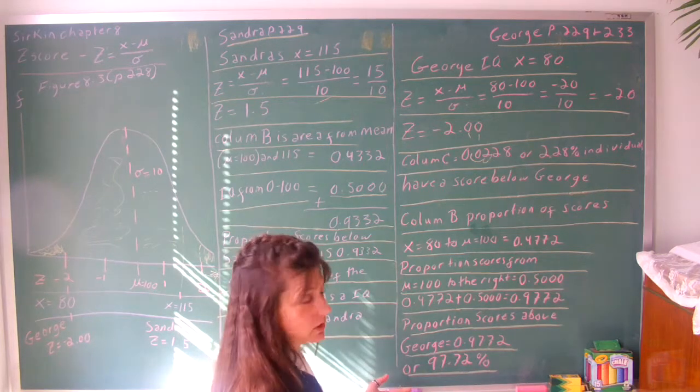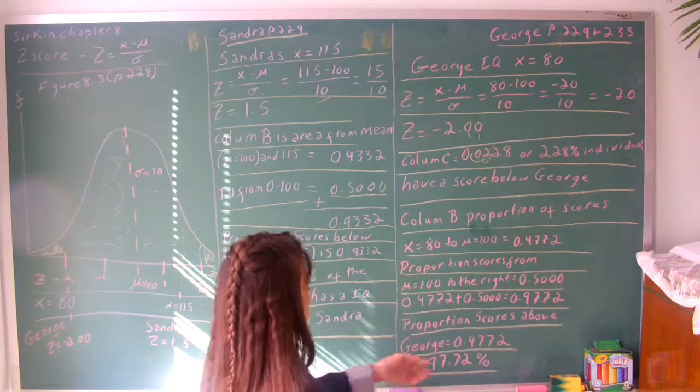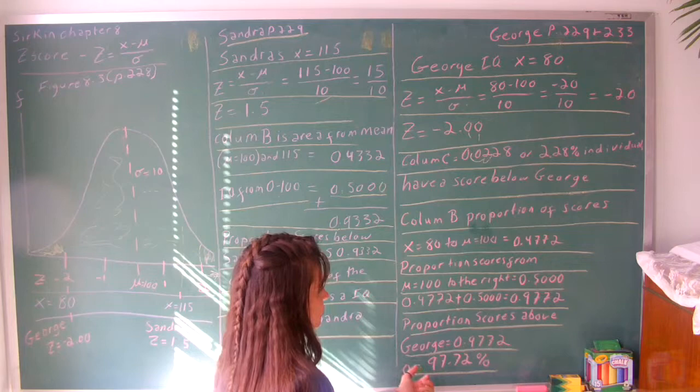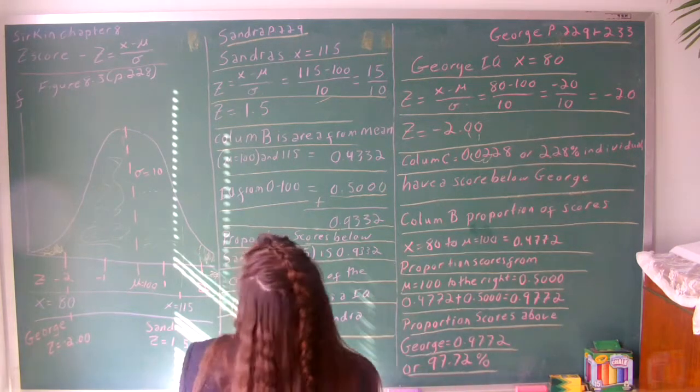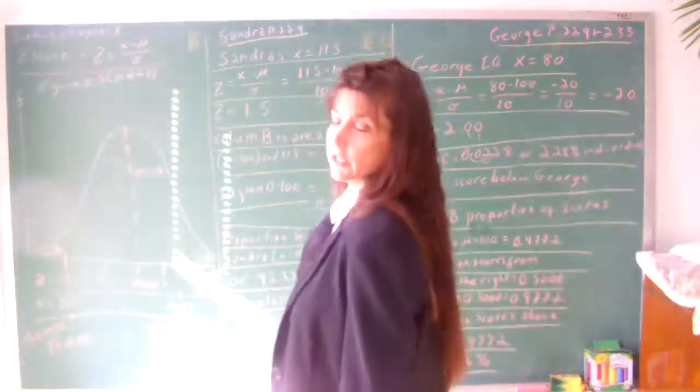Or in other words, it will make more sense. Percentages make more sense than proportions. We would say 97.72% of individuals have scores above George's. This is an explanation of the z-score using the data in your textbook.